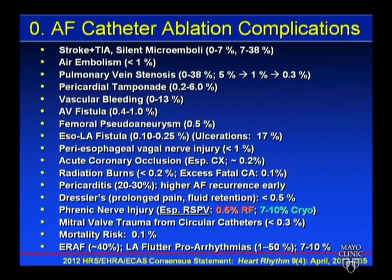Esophago-atrial fistula incidence is 0.1% to 0.25%. Ulcerations are present in about one in six patients on EGD, but ulcerations are not a good marker for eventual fistula. These present typically two to four weeks after the procedure — with sepsis and leukocytosis, dysphagia, seizures from embolization of food or air to the brain, multi-organ failure, or GI bleeding. Pulmonary vein stenosis typically presents anywhere from three to 12 months.